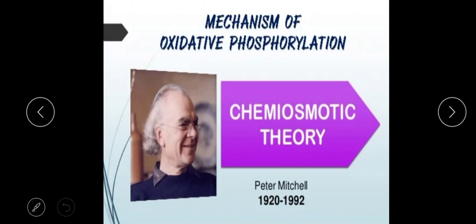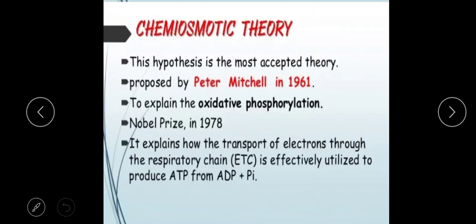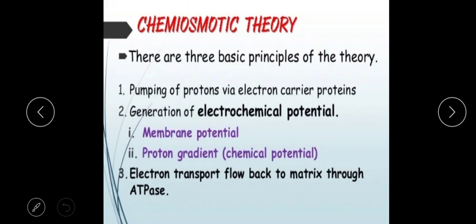The other important hypothesis is the chemiosmotic hypothesis, also known as the chemiosmotic theory, proposed by Peter Mitchell in 1961. He received a Nobel Prize for this work. This theory explains how energy released from electron transfer in the electron transport chain creates a gradient that is effectively utilized to produce ATP.